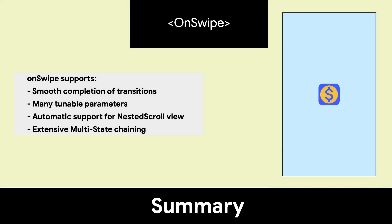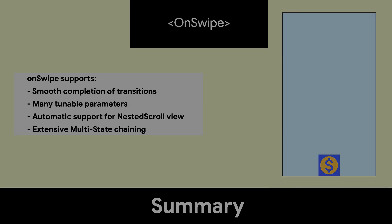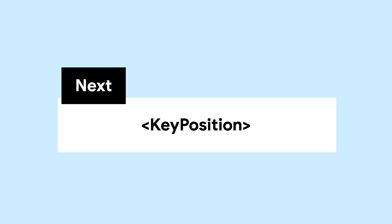In summary, OnSwipe allows you to create rich, complex, swipe-based interactions across many states. We are more than halfway through this series. Only the keyframe tags are left. Next, we will discuss keyposition.